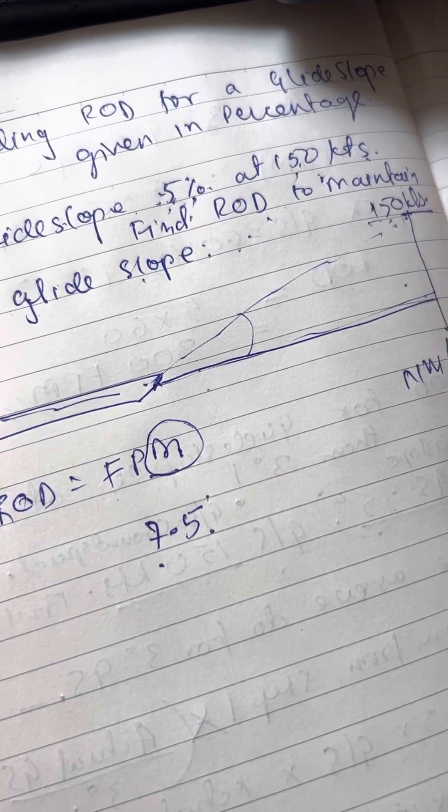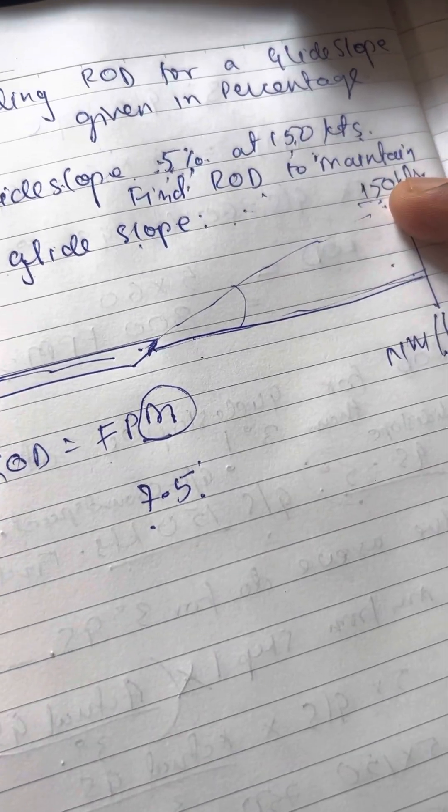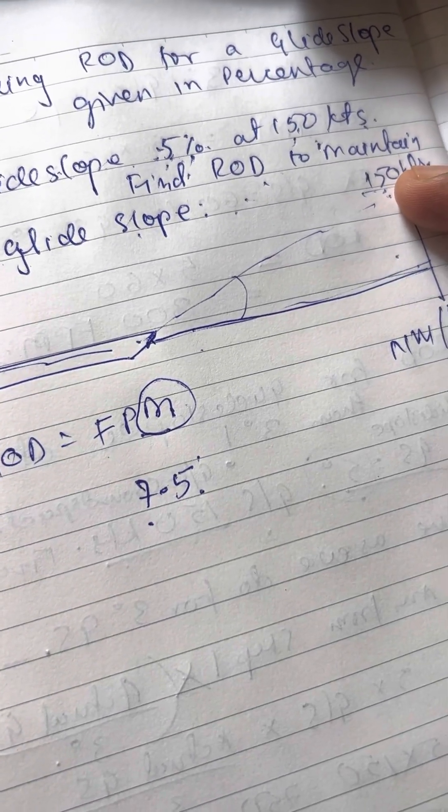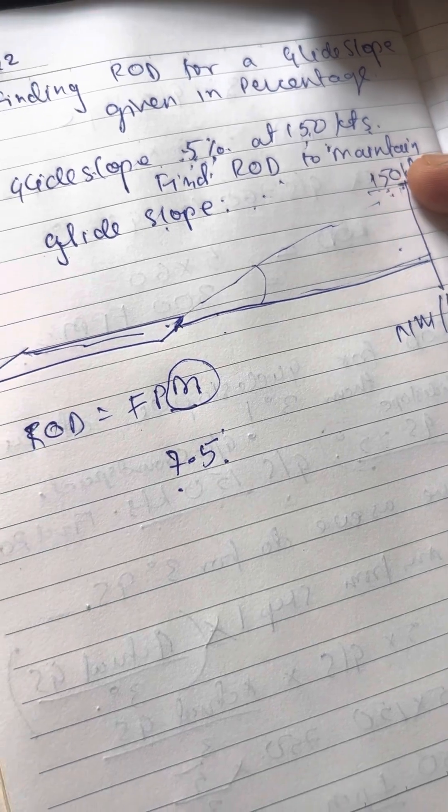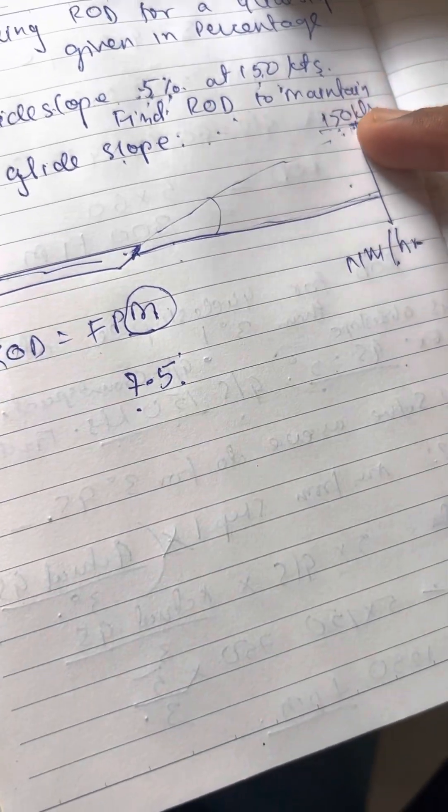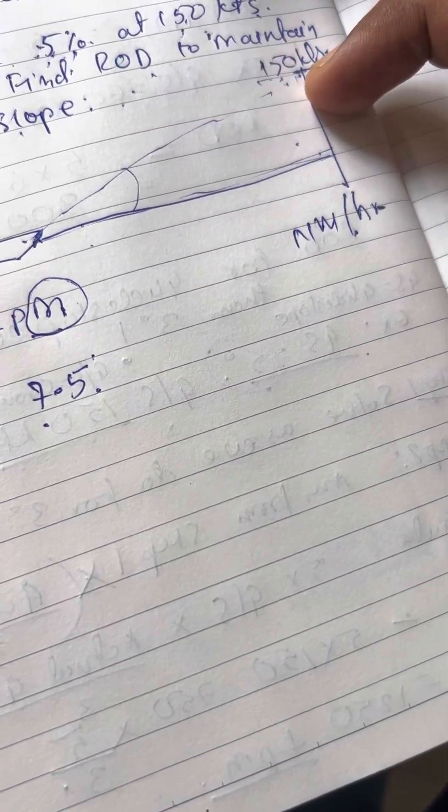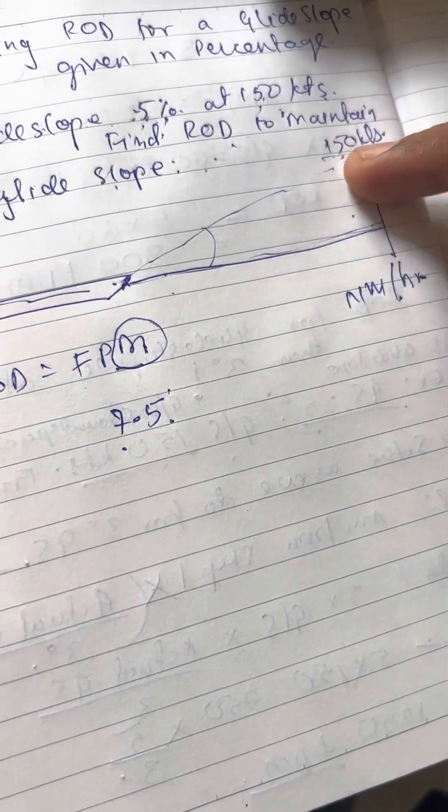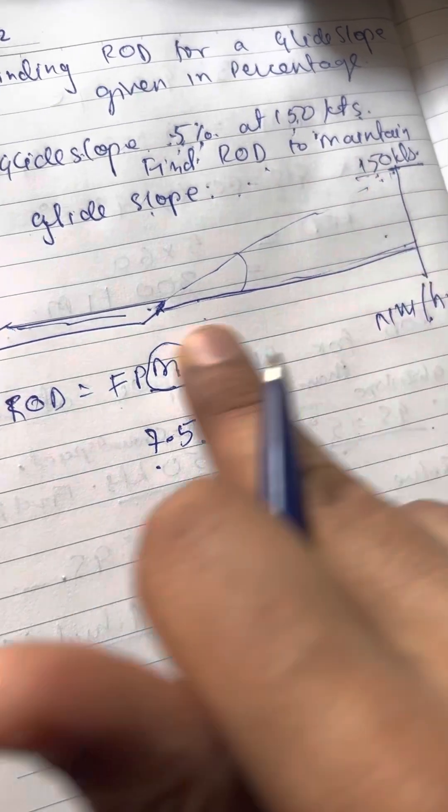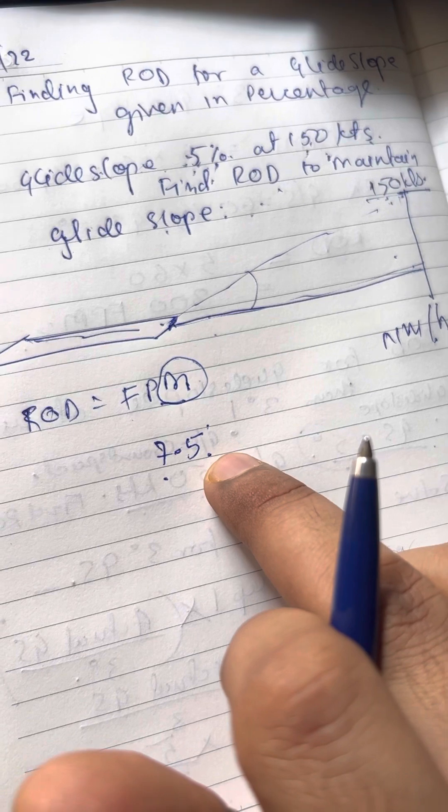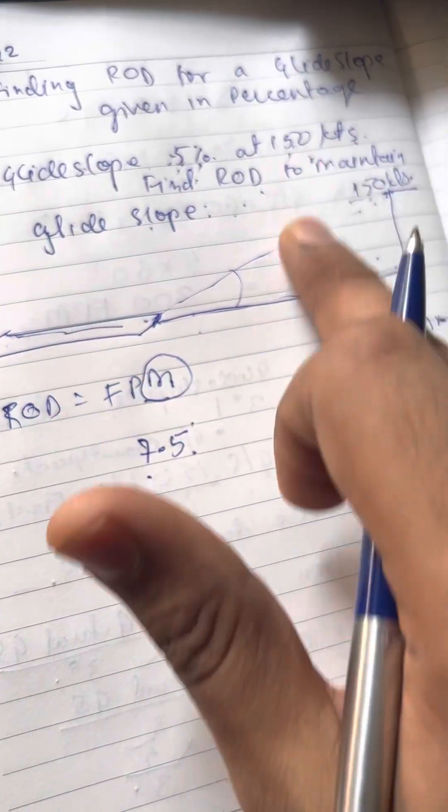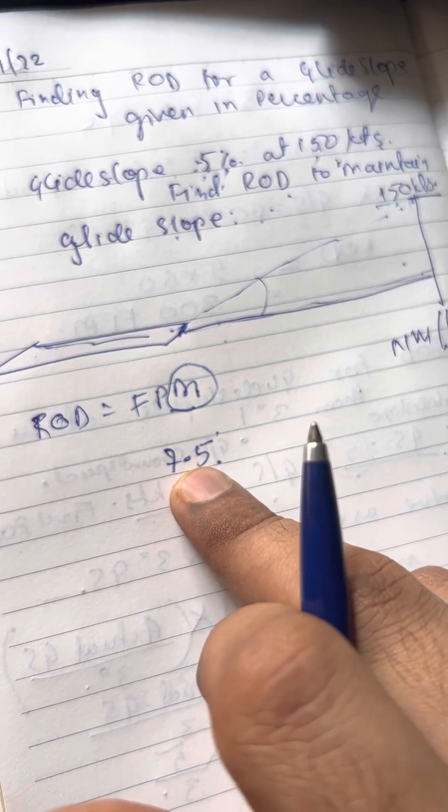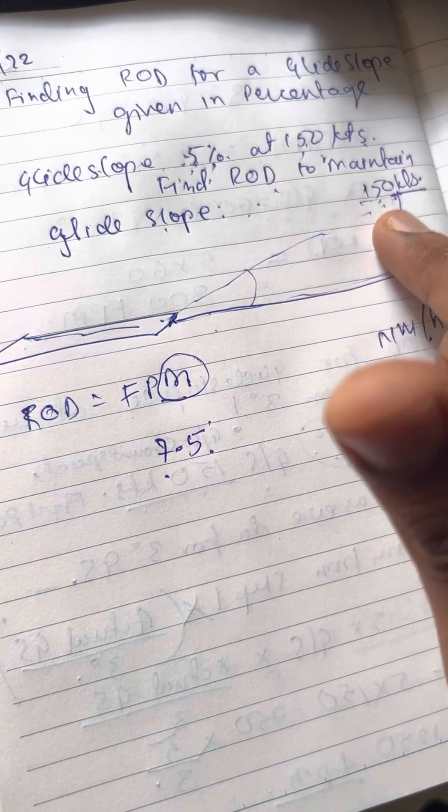For every 150 knots, probably you are going 150 nautical miles ahead every hour. 7.5 nautical miles, that is 5% of this. 7.5 nautical miles, you are going vertically.